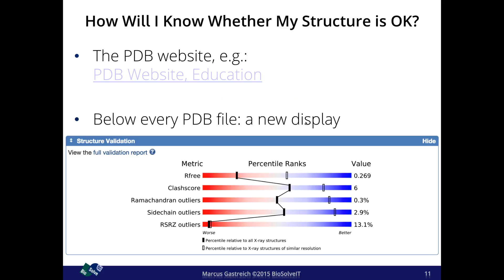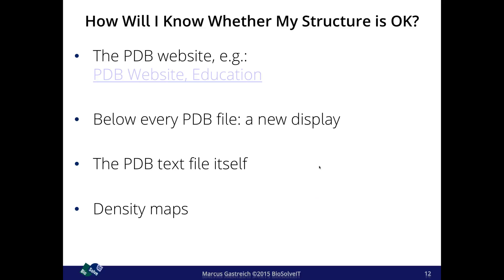Going back to the slides — the next resource I can recommend is that below every PDB file, most of the ones I've seen lately have introduced a new display to check quality, which is really nice. You have 'bad' on the left and 'good' on the right with a simple statistical fingerprint that helps you assess whether you're in a rather good situation or not. The PDB text file itself contains information — if you open it with a text editor you can look at things such as resolution. And there are density maps: if you really want to visualize things, there are tools we'll use in a moment.